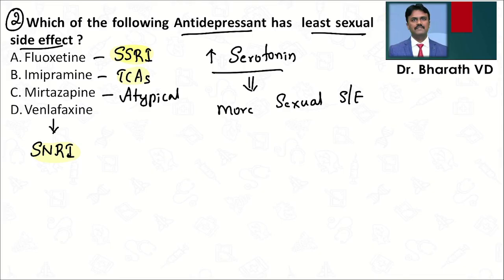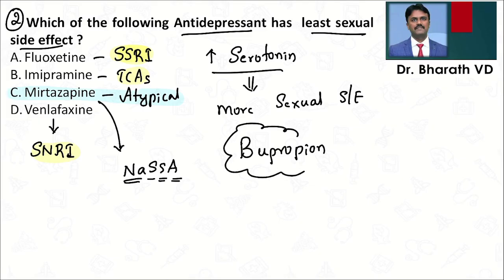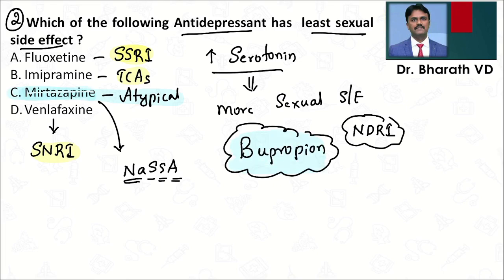The answer is mirtazapine, which causes the least sexual side effect. Mirtazapine is atypical — it is called NaSSA: noradrenergic and specific serotonergic antagonist. Another drug causing least sexual dysfunction is bupropion, which is also used for smoking cessation. Its mechanism is noradrenaline-dopamine reuptake inhibition. So remember: mirtazapine and bupropion both cause the least sexual side effects.